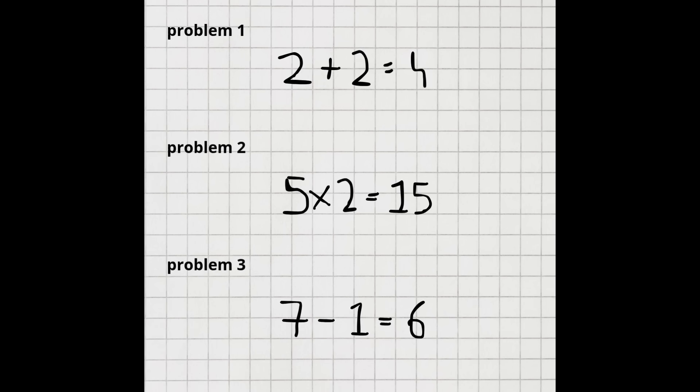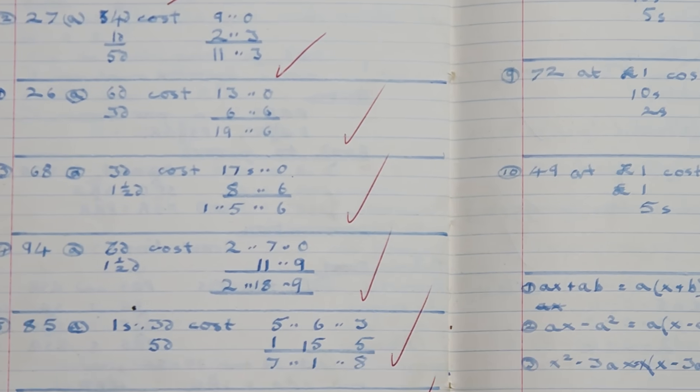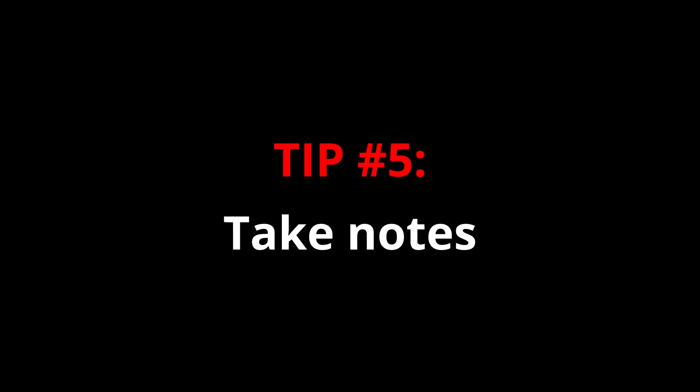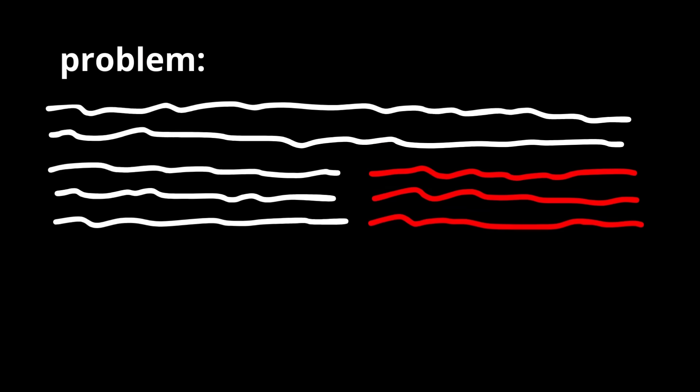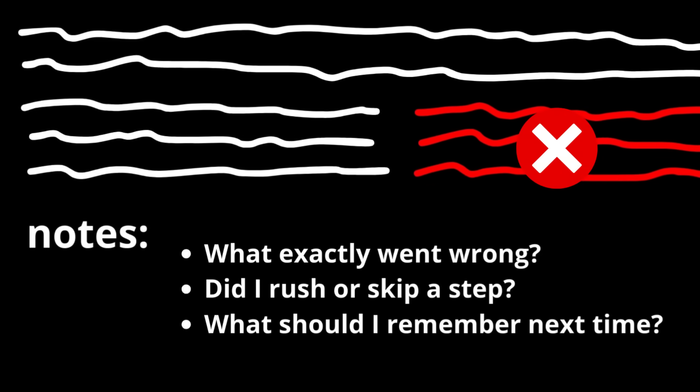Self-correction system. Use check marks for problems you got right and crosses for the ones you got wrong. This helps you quickly identify which types of problems are giving you the most trouble. Take notes. Every time you get a problem wrong, write a short note explaining why you made the mistake and how to avoid it in the future.